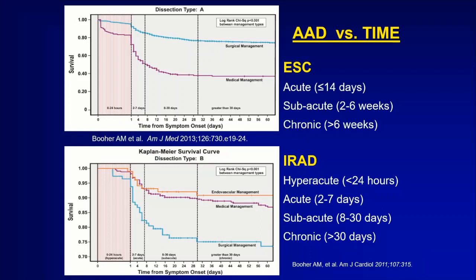In this first 24 hours — I call that the hyperacute period — if you don't get to the operating suite, we've lost about 20% of those patients. From day two to seven, we lose another 20 to 25% — I call that the acute phase. The subacute phase is from day eight to 30, and after day 30 we'll call that chronic. What's really important is that on average, a patient with a type A aortic dissection has a 1% per hour mortality in that first day. So we've got to find those patients and get them to the operating room for repair — otherwise the mortality risk is just overwhelming.